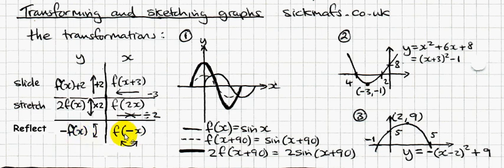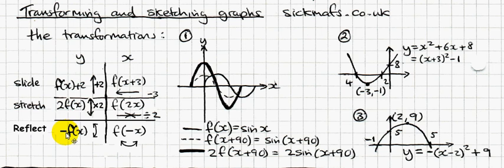If you've got a negative number, that means do the opposite — it reflects the graph. Putting a minus outside the function has a vertical effect, so multiplying by -1 outside the function reflects it vertically. Multiplying by -1 inside the function reflects it horizontally.